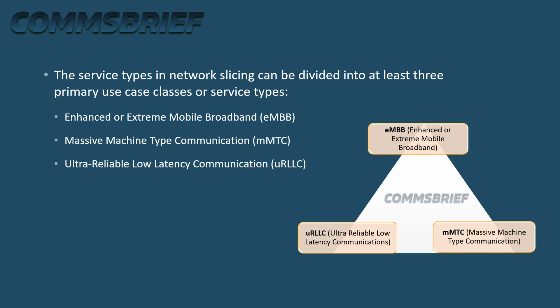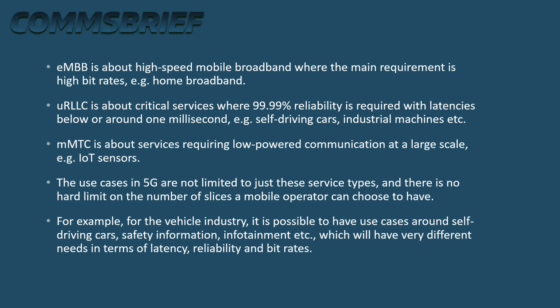The service types in network slicing can be divided into at least three primary use case classes: enhanced or extreme mobile broadband (eMBB), massive machine type communication (MMTC), and ultra-reliable low-latency communication (URLLC). eMBB is about high-speed mobile broadband where the main requirement is high bit rates — for example, home broadband. URLLC is about critical services where 99.99% reliability is required with latencies below or around 1ms, for example self-driving cars and industrial machines. MMTC is about services requiring low-powered communication at large scale, for example IoT sensors.